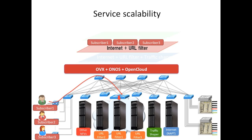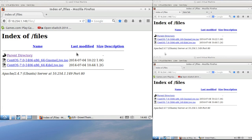Finally, we want to show a service scalability example. We will show you URL filter service scale-out. First, a single user will start downloading a big file from the internet. Then, suppose the number of users is increasing and they start downloading something. The download speed would be decreasing. At some threshold, the system automatically spawns new URL filters and pushes flows for them, which causes the downloading speed to speed up again for all users.